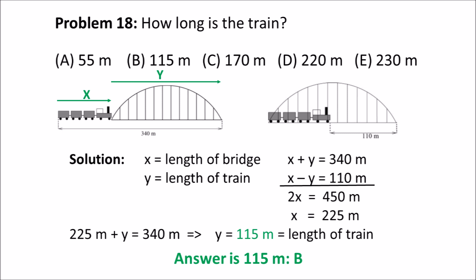To answer this problem, we're going to use variables. X will be the length of the bridge and Y will equal the length of the train. X plus Y, which is the left figure, would equal 340 meters. The figure on the right shows X minus Y is equal to 110. If we add those two equations, we get 2X equals 450 meters, or X equals 225. If we solve for Y then, we get the answer.